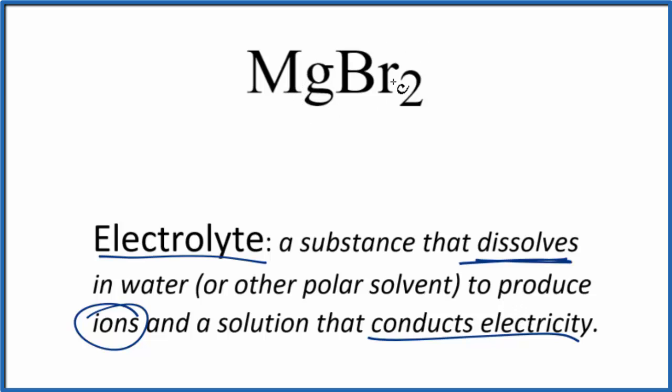Magnesium is a metal and bromine is a non-metal, so we'd expect this to be an ionic compound. If you know your solubility rules, compounds with bromine, the bromide ion, in general they are soluble with just a few exceptions.